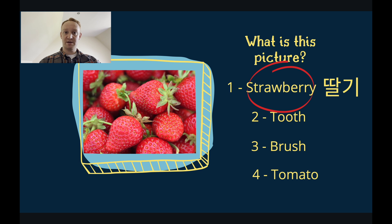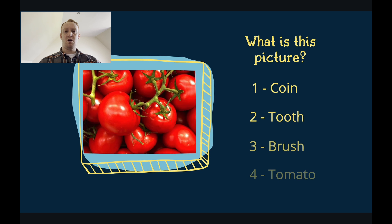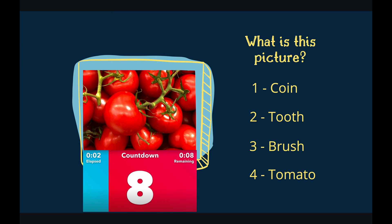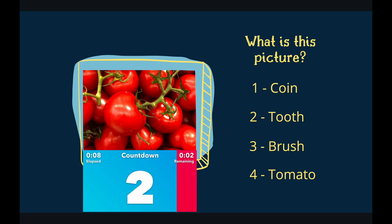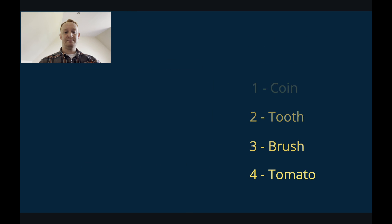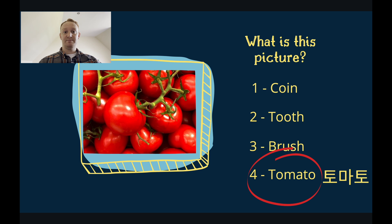What is this a picture of? Is it a coin? Is it a tooth? Is it a brush? Or is it tomatoes? You have 10 seconds. The answer was tomatoes. These tomatoes are very red. These tomatoes grow on vines. Tomatoes are great in a sandwich.